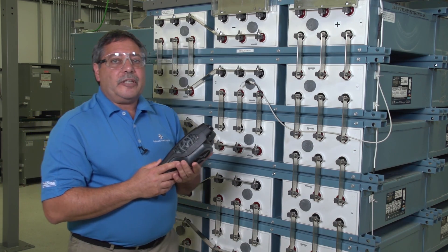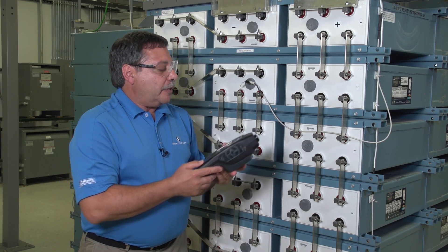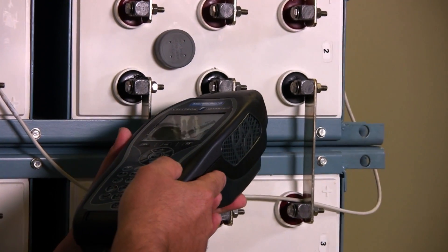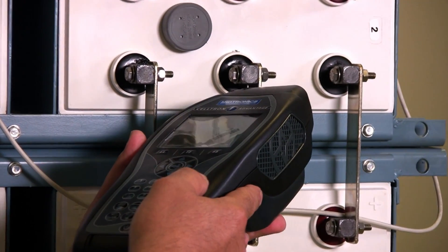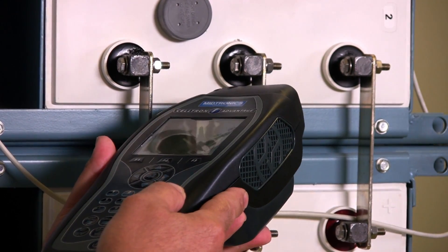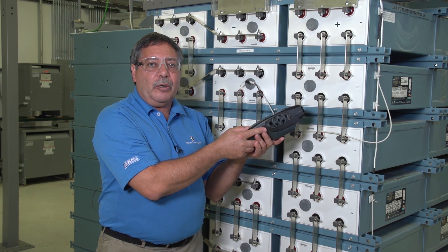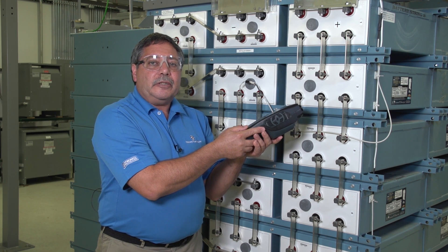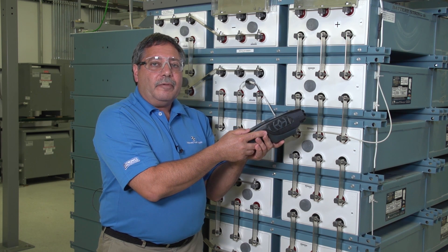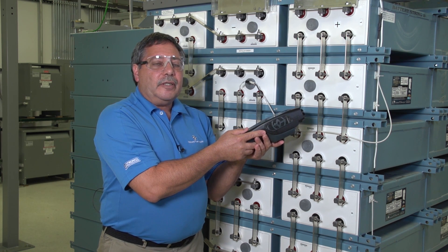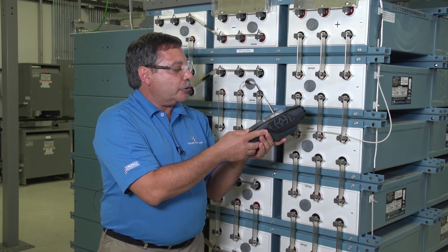The correct way to take the temperature is to have the unit within, say, two to two and a half inches of the negative post of the cell. We always want to take our temperature readings on the negative post because when a battery generates heat, it goes to the negative, and we can detect it first at the negative post.